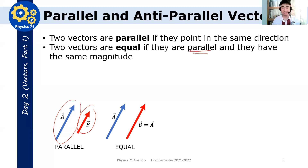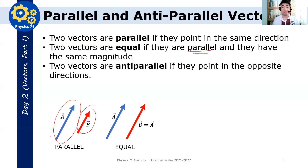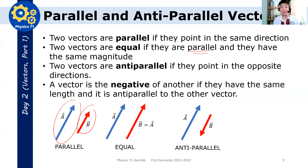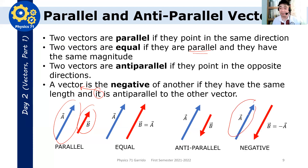That's an important definition. Two vectors are anti-parallel if they point in the opposite direction. For example, a and b are anti-parallel to each other because a is pointing in one direction while b is pointing in the other direction. Finally, a vector is the negative of another vector if they have the same length and are anti-parallel. For example, a is the negative of b because the direction of a is opposite to b — they're anti-parallel — and the length of a equals the length of b. Therefore, b equals negative a, or a equals negative b.